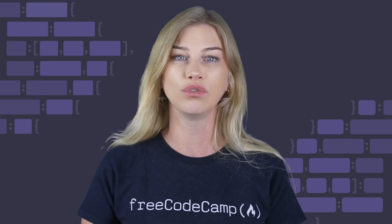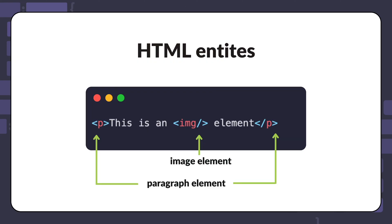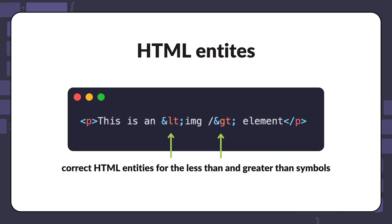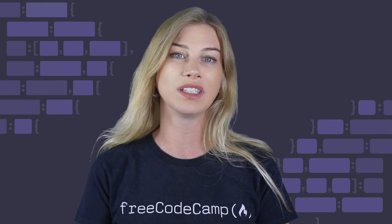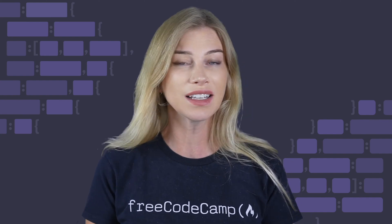To fix this issue, you can use HTML entities. Here is an updated example using the correct HTML entities for the less-than and greater-than symbols. These types of character references are known as named character references. Named character references start with an ampersand sign and end with a semicolon. By using a named character reference, the HTML parser will not confuse this with an actual HTML element. Here is what the updated paragraph element looks like on the page — now users will be able to see the entire image element syntax as you intended it.